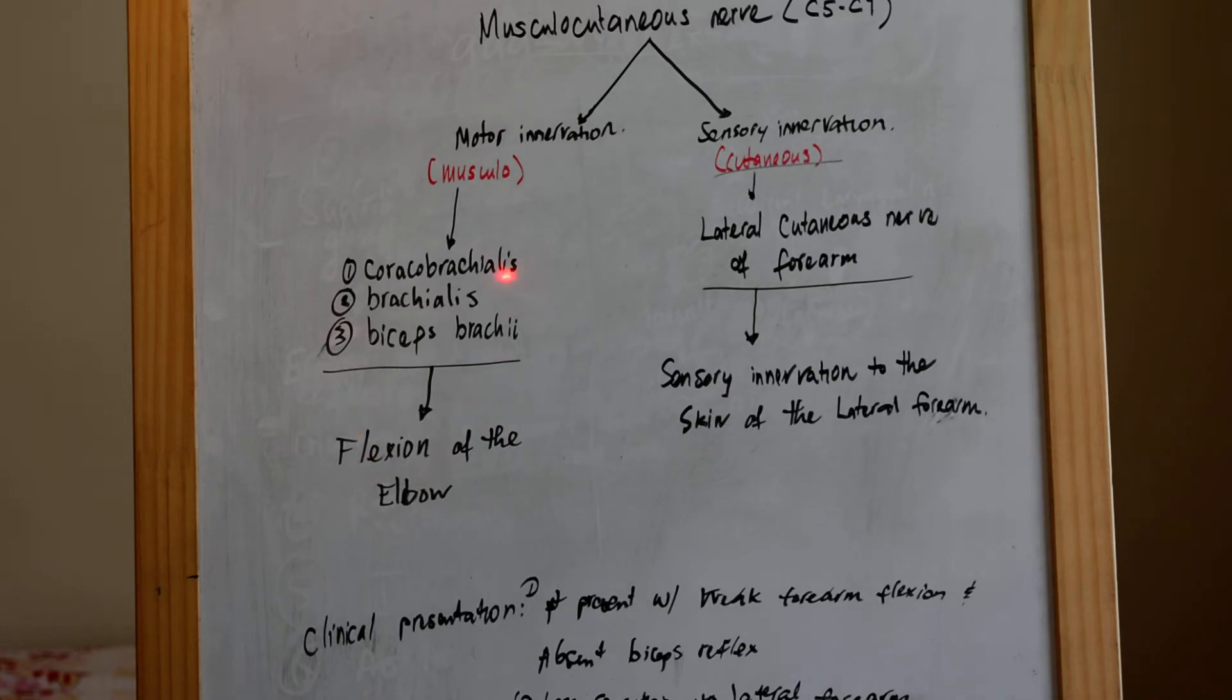As the nerve fibers of the musculocutaneous nerve continue downward, it becomes the lateral cutaneous nerve of the forearm, where it provides the somatic sensory innovations to the skin of the lateral forearm.